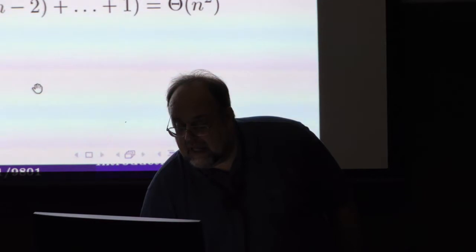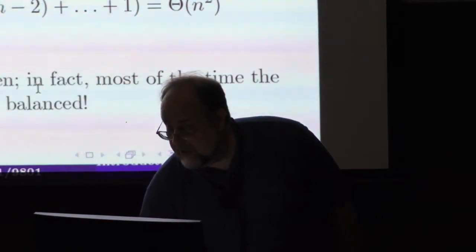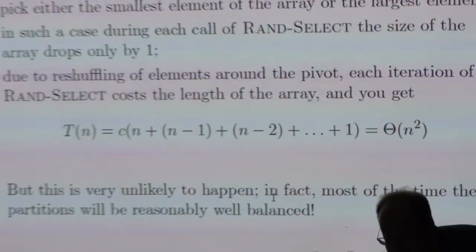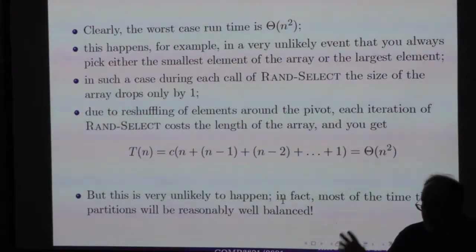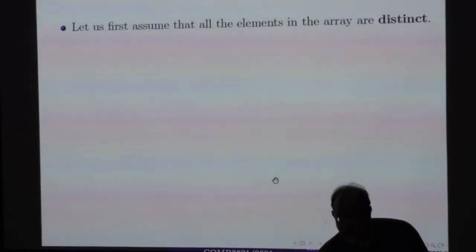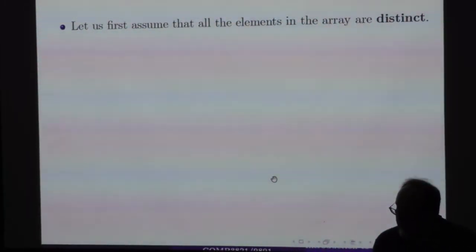So clearly the worst case runtime is quadratic, because you might be just peeling element by element. If you always choose a pivot that is either the smallest or the largest in the array, but that's very unlikely. In this case, of course, the algorithm will run in a quadratic time. But in most of the cases, the two partitions, just by law of large numbers, will be reasonably balanced. So we do this with the assumption to make things a little bit simpler, with the assumption that all the elements in the array are distinct.